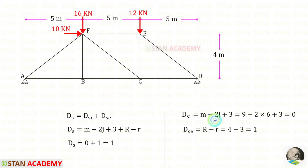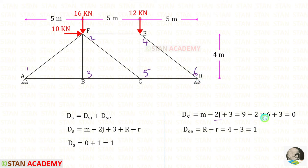J is the number of joints. Let us count the joints: 1, 2, 3, 4, 5, 6. J is 6. For DSi, we will get 0.